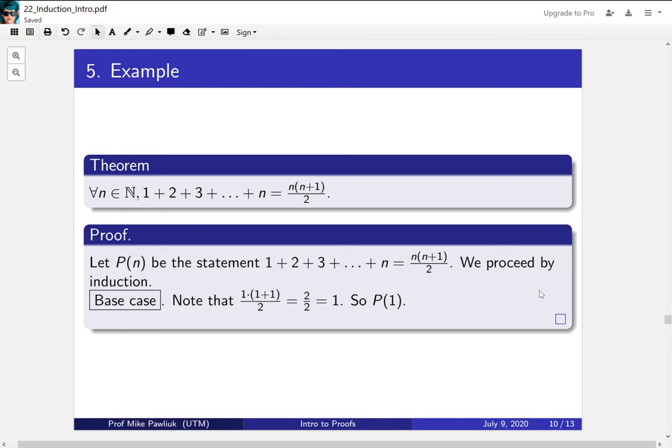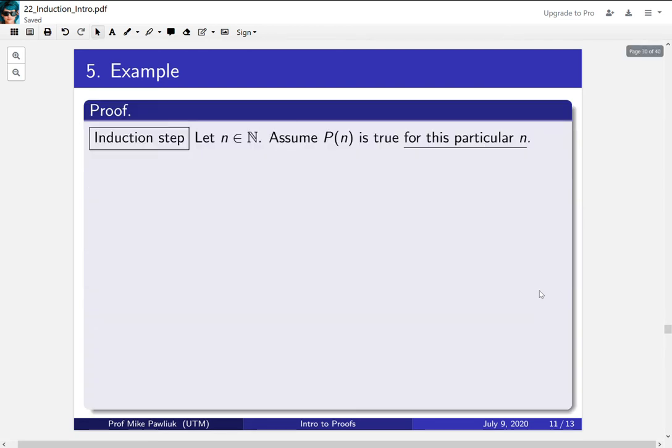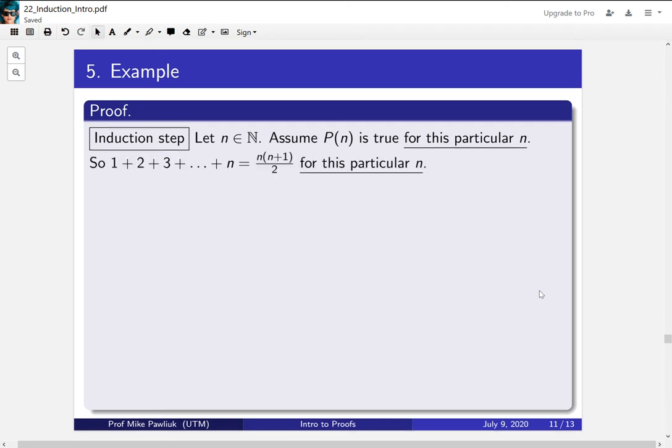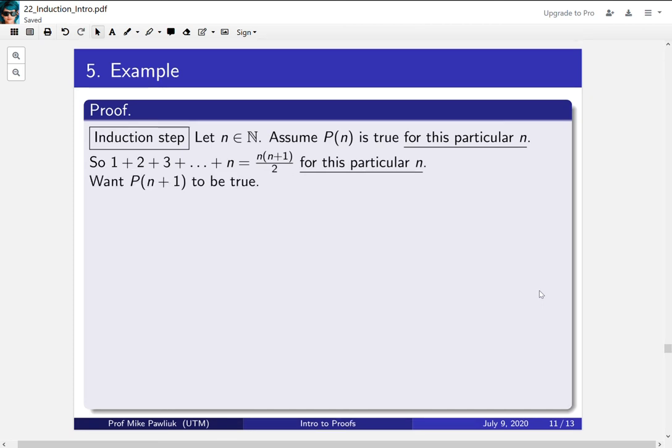Now let's move on to the induction step. So let n be a natural number and assume that P(n) is true for this particular n, not all n, just one particular stage that you're at. If you want, think about it as n equals 100 and now you're trying to prove it for n equals 101. Since we know that P(n) is true for that n, we know that this sum is equal to this formula. But we only know it for this n. Our goal is to prove it for the next one.